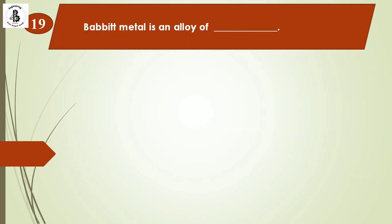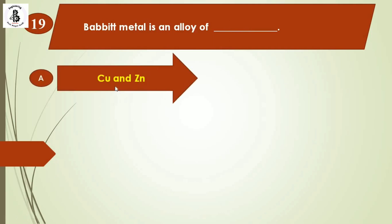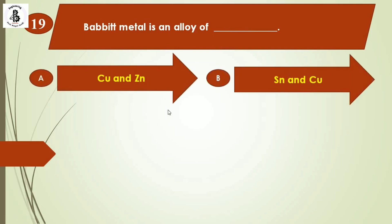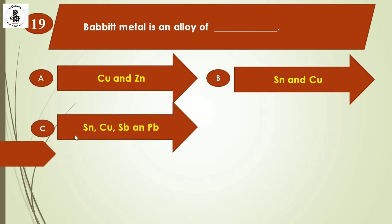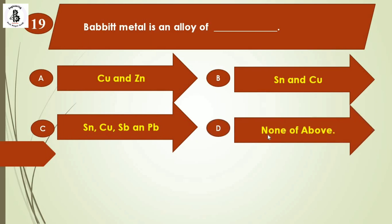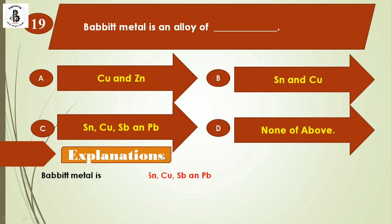Next question: Babbitt metal is an alloy of — option A: copper and zinc; option B: Sn and Cu; option C: Sn, Cu, Sb, and Pb; option D: none of the above. Babbitt metal is an alloy of tin (Sn), copper (Cu), antimony (Sb), and lead (Pb). The right answer is option C.